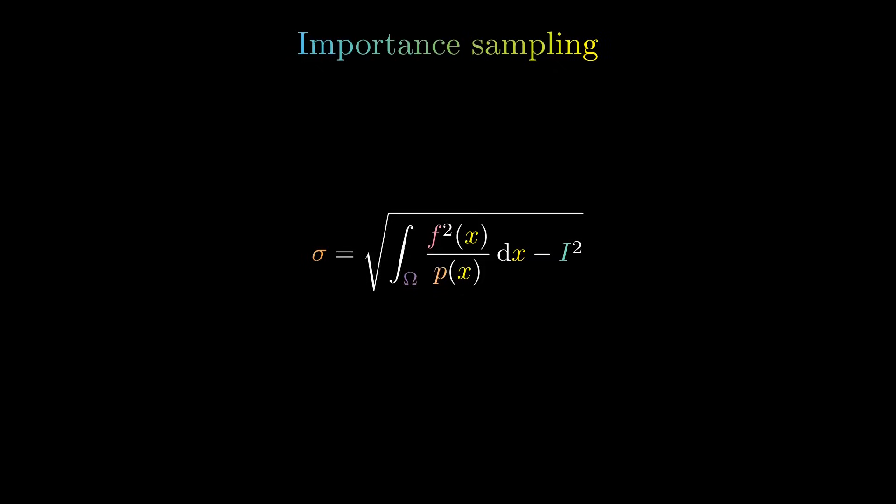Recall the expression of the standard deviation, sigma, of the variable we are sampling from. The choice of the density function P can make, or break our method, since it determines whether sigma is large or small.